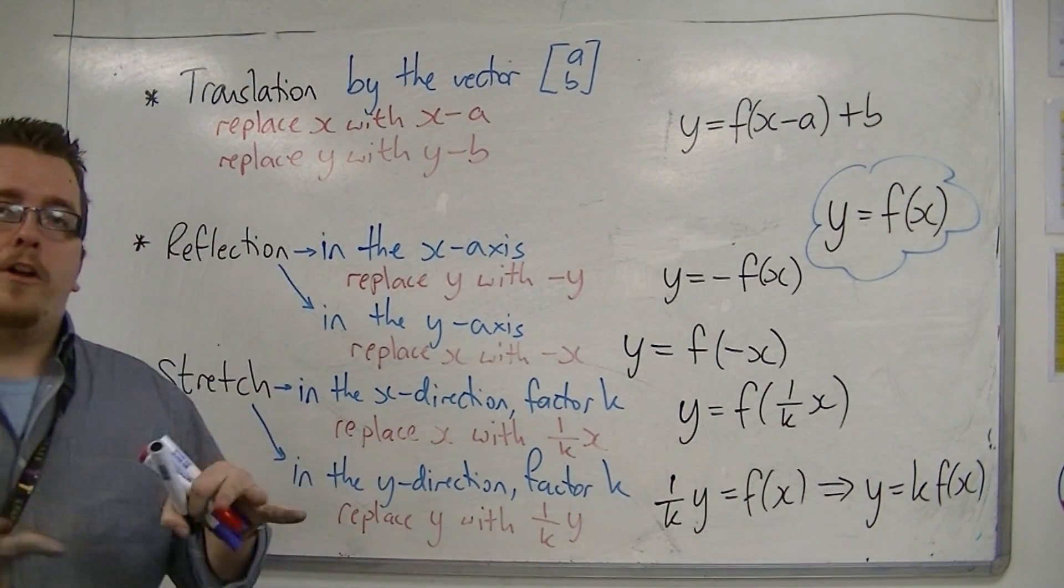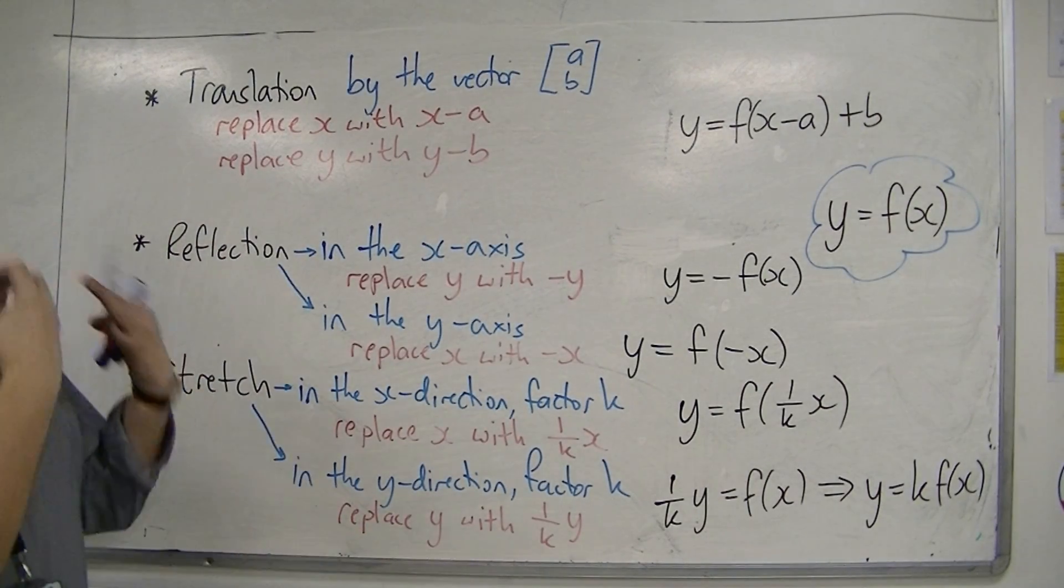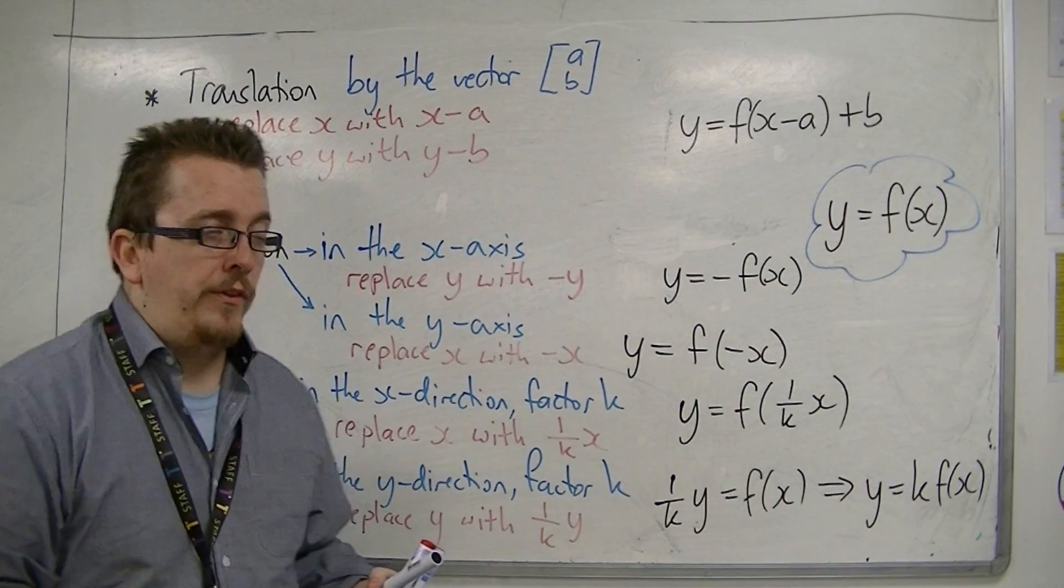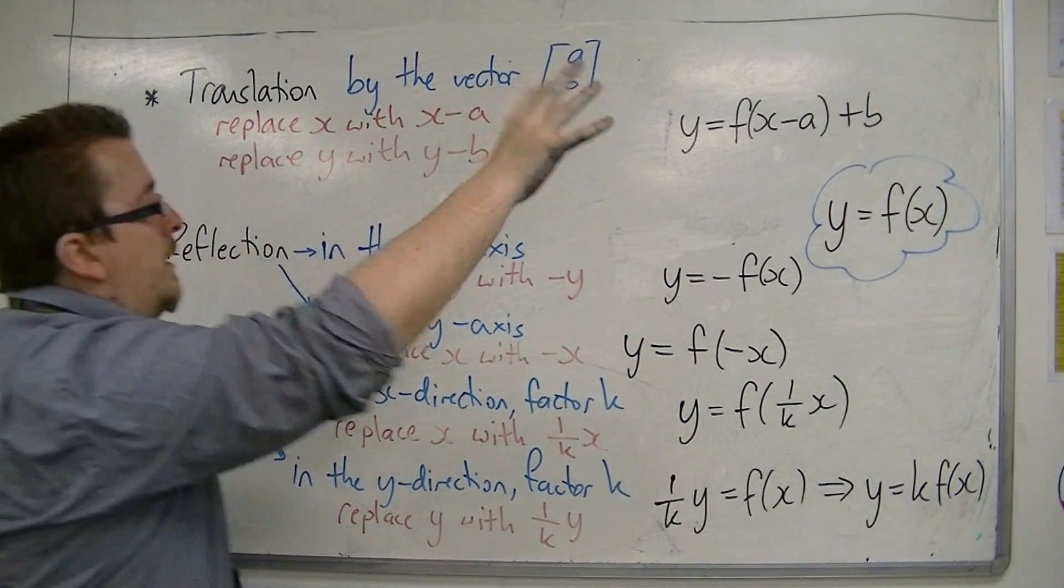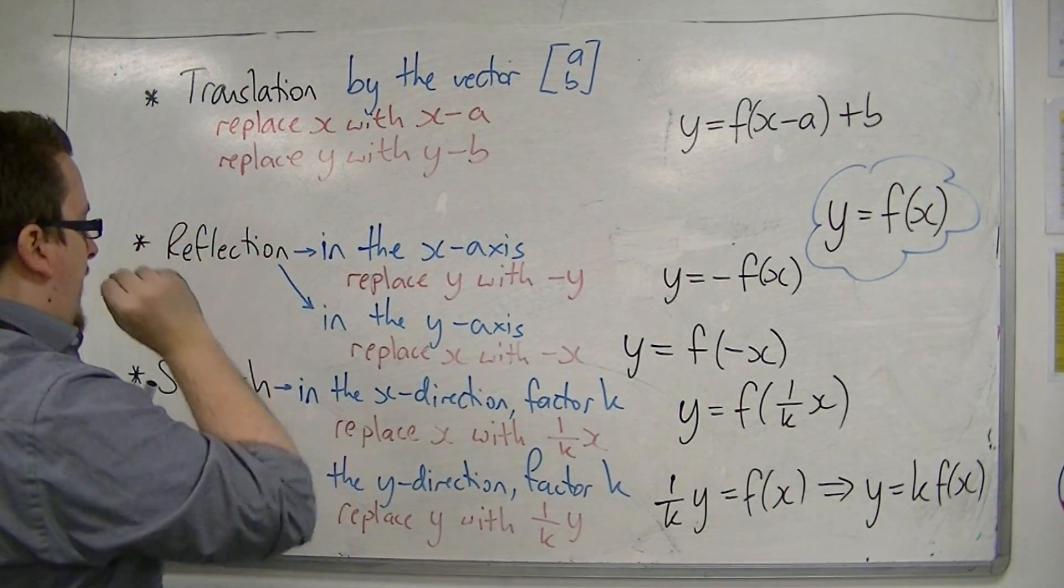So these are the ground rules for graph transformations. You have the translation, you have the reflection, and you have the stretch.